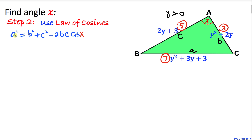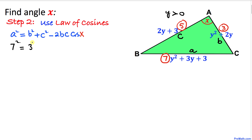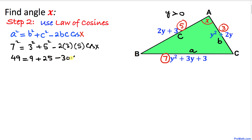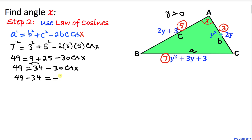Let's fill in the values. In our case, a is 7, b is 3, and c is 5. So we get 7 squared equals 3 squared plus 5 squared minus 2 times 3 times 5 times cosine of x. Simplifying, that gives us 49 equals 9 plus 25 minus 30 cosine of x, so 49 equals 34 minus 30 cosine of x.